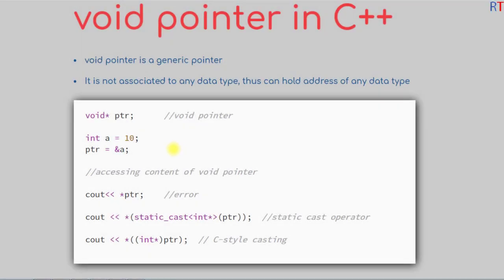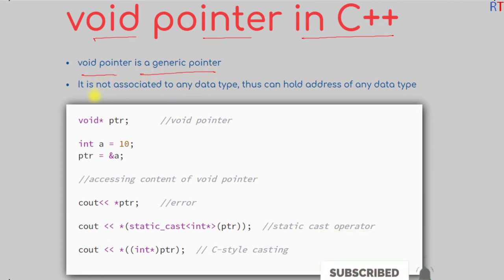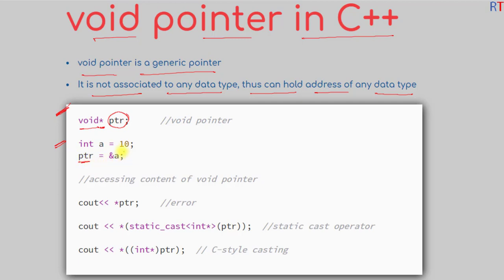In this video we're going to talk about void pointers in C++ programming. A void pointer is a generic pointer that is not associated with any data type, so it can hold the address of any data type. The syntax is: the void keyword, then the asterisk sign, then the name of the void pointer.